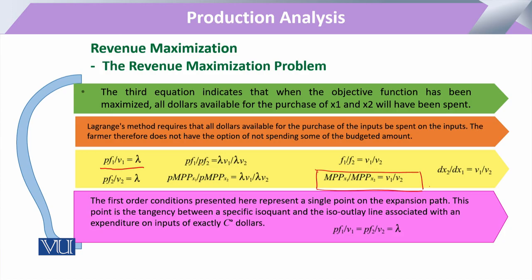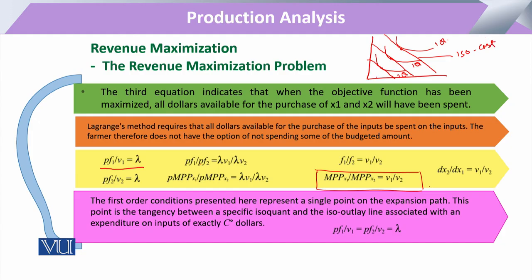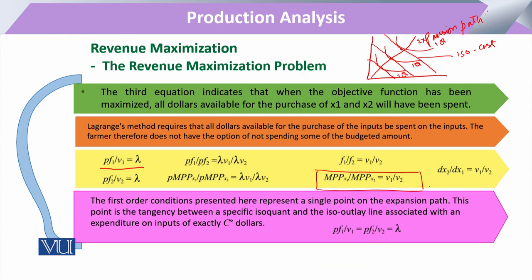If we draw a graph showing the first, second, and third iso-quants with their respective tangent lines, each tangent point shows the intersection of an iso-cost line with the respective iso-quant. When we join these tangent points, this gives us the expansion path — the path on which a firm can increase its output. That path provides only those combinations for which there is the least-cost combination available to the firm for maximizing its revenue.